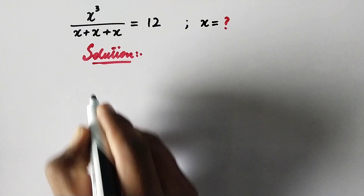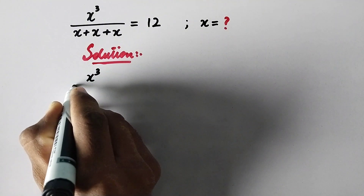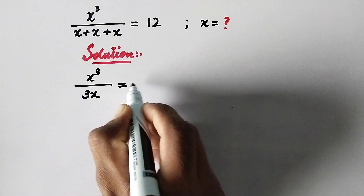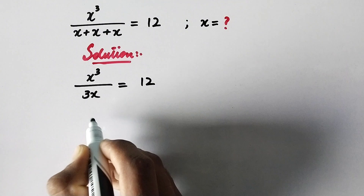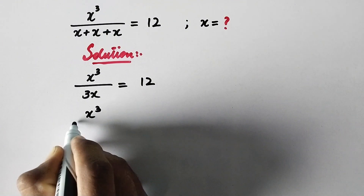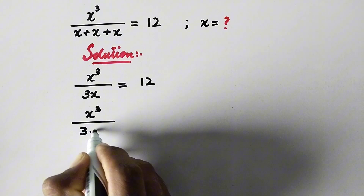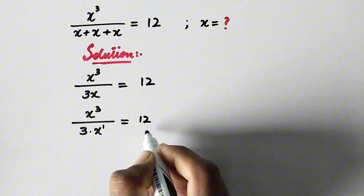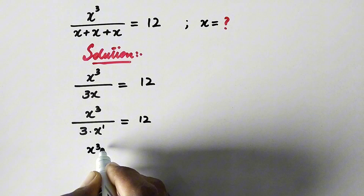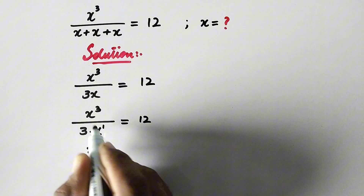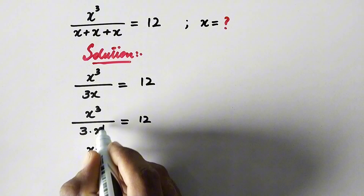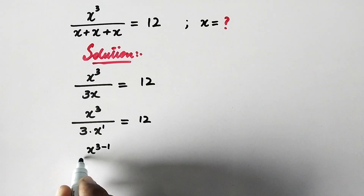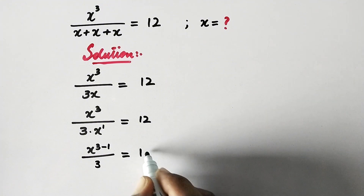In the first step we will write x cubed over 1x plus 1x plus 1x, which will be equal to 3 times x, so x cubed over 3x is equal to 12. We can take the power of 1, and since x is being divided by x and the bases are the same, the powers will be subtracted. Therefore here we can write 3 minus 1, leaving a power of 2 over 3, equal to 12.